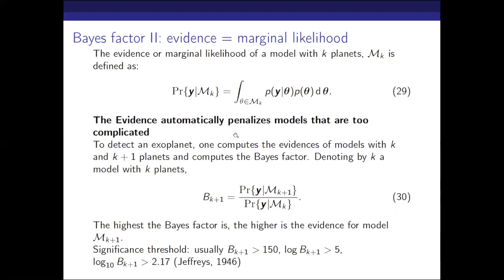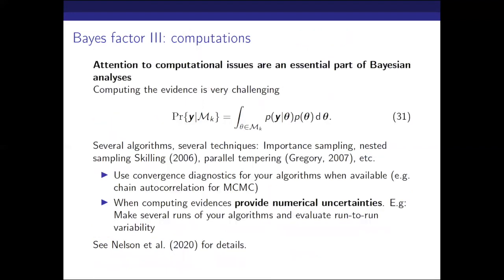To detect an exoplanet, you compute the Bayes factor, which is the ratio of the evidences of the K+1 planet model and the K planet model. The higher the Bayes factor, the higher the evidence for the K+1 model. Usually the significance threshold is taken as 150, which comes from the Jeffreys scale. You really need to be careful with your numerical methods to compute the evidence — this may be a huge integral and is computationally very challenging. You can use different techniques such as parallel tempering. If you want an overview of different techniques in the context of exoplanets, look at the relevant reference.